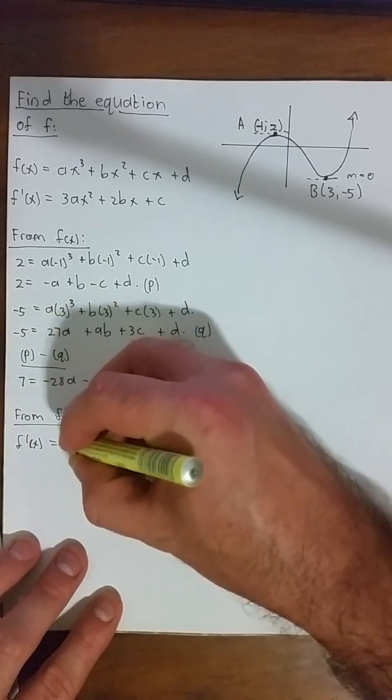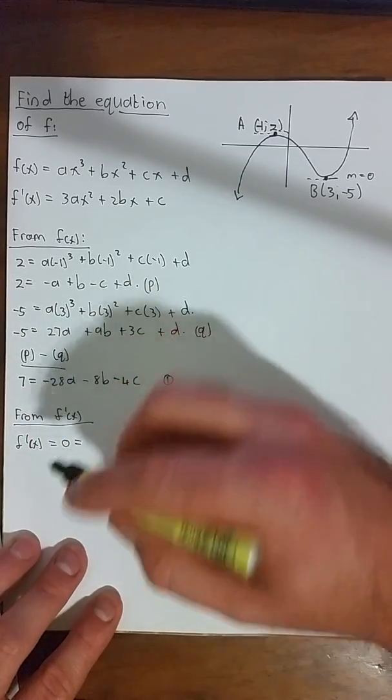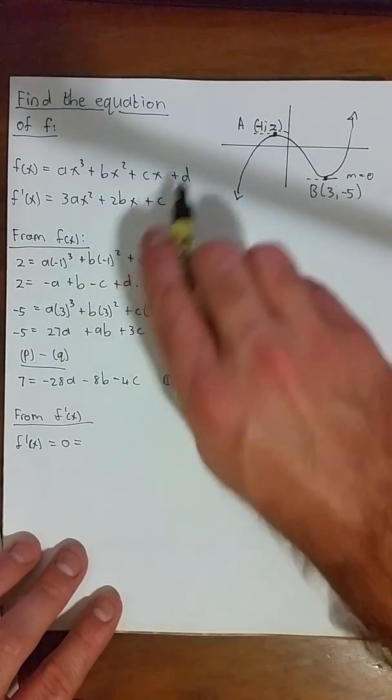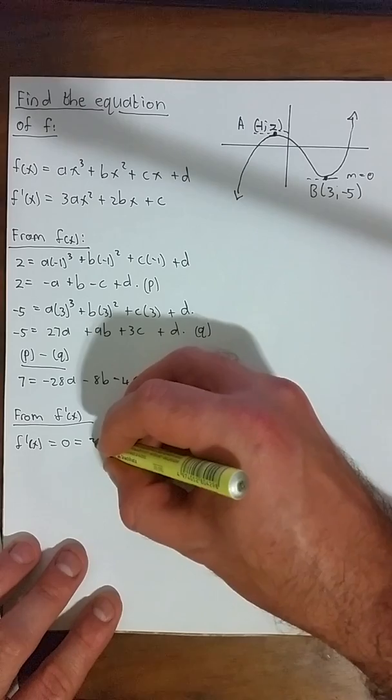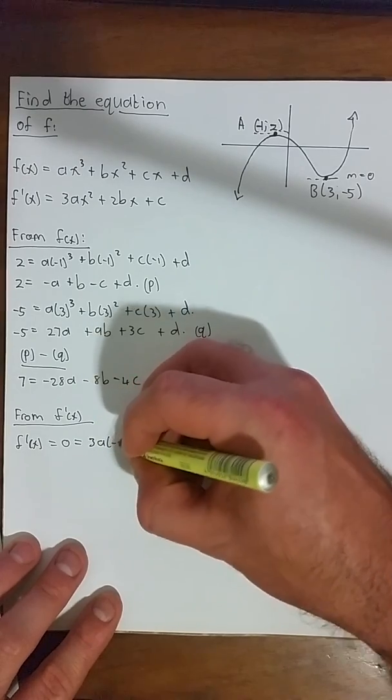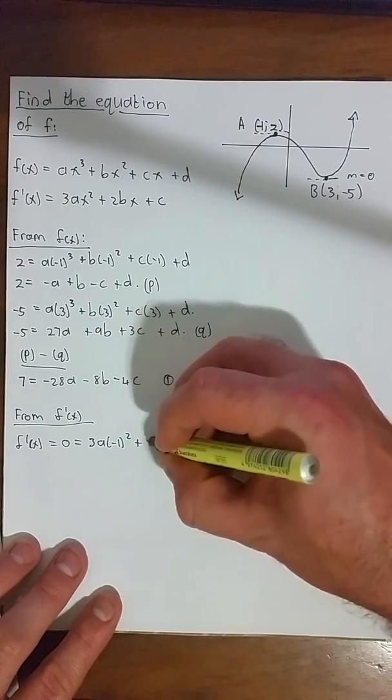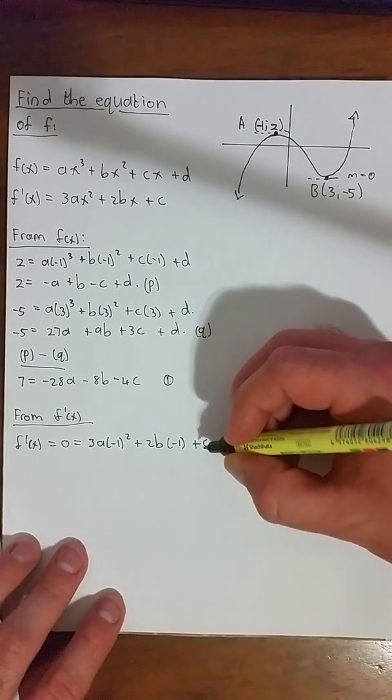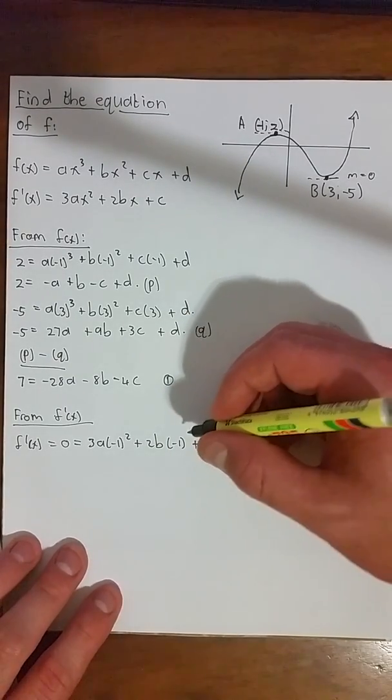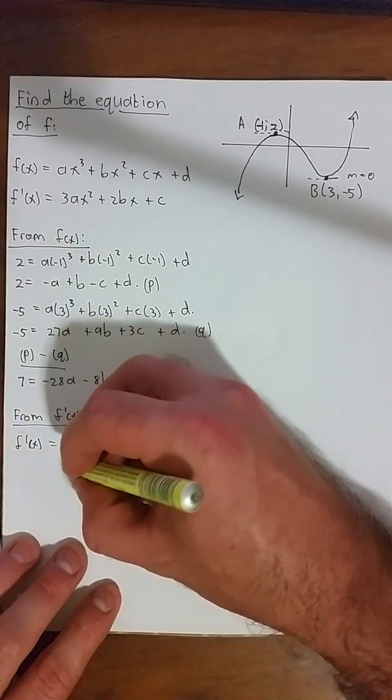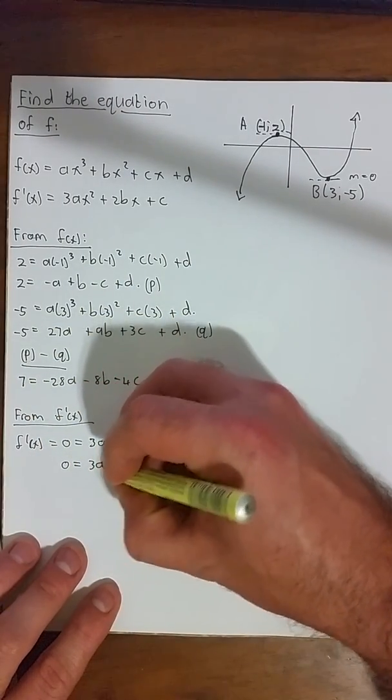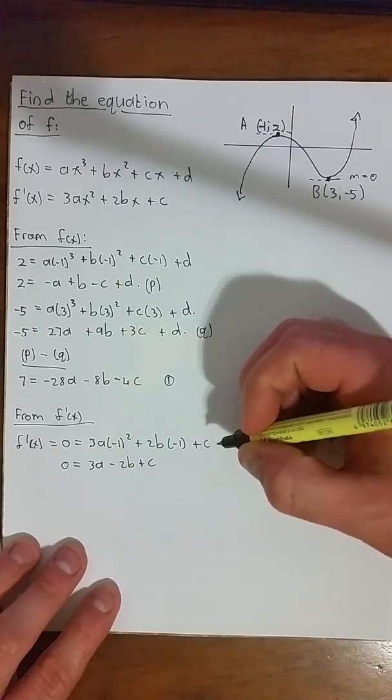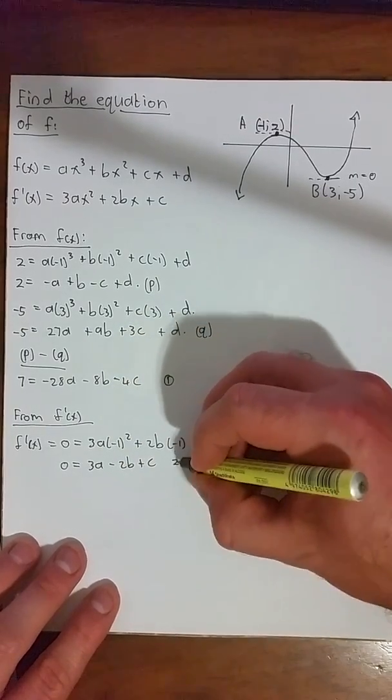So the outcome of this will be 0 when the x value in here is -1 or 3. Let's start with the -1. That will give us 3a(-1)² + 2b(-1) + c. Now, simplifying that slightly, we get that 0 = 3a - 2b + c. Let's call that equation 2.